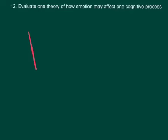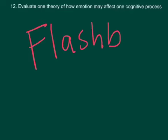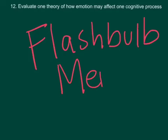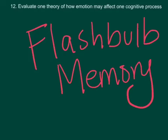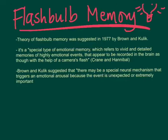We're going to be dealing with flashbulb memory — the theory that strongly emotional events give us a super sensitive memory of that event. The theory of flashbulb memory was suggested in 1977 by two researchers named Brown and Kulik. They said that flashbulb memory is a special type of emotional memory which refers to vivid and detailed memories of highly emotional events that appear to be recorded in the brain as though with the help of a camera's flash.